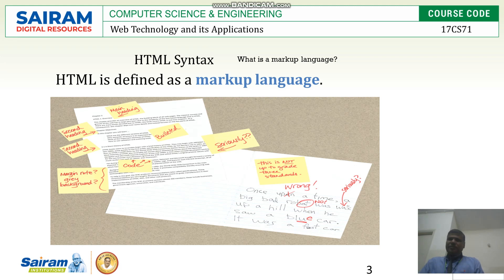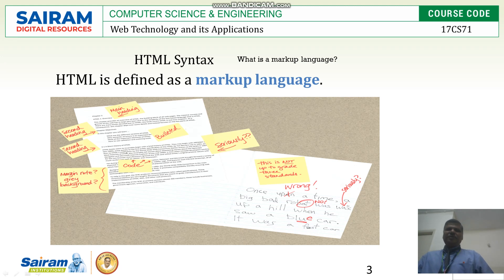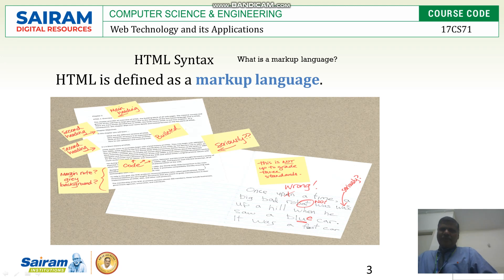What we can say about HTML is that it is a markup language. The reason for this markup language is just to know how the document can be beautified. Now you can see in this particular example: some data is there, with a main heading, then a second heading, then a second heading again with margins, and bullet points as well.